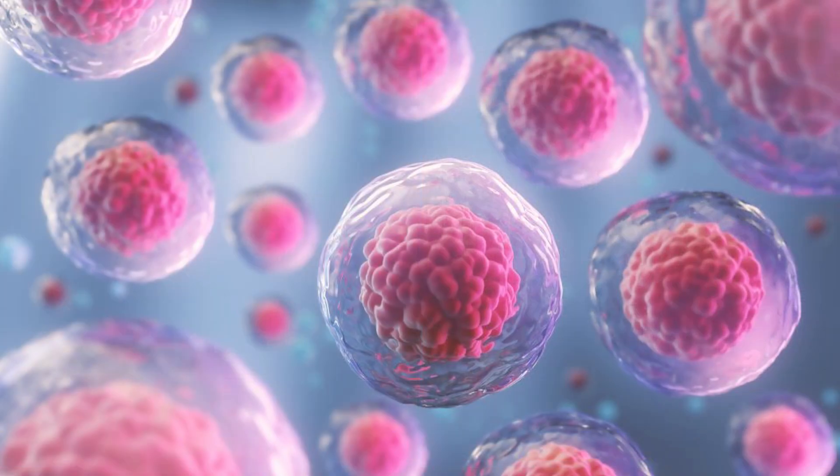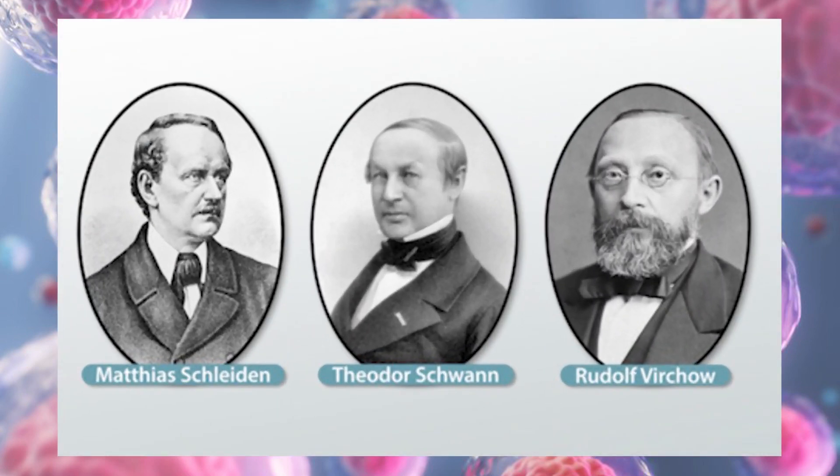After a few years, three scientists were doing experiments regarding cells and revealed some facts about the cells. Those three scientists are Matthias Schleiden, Theodor Schwann, and Rudolf Virchow. The ideas or facts introduced by them is called the cell theory.